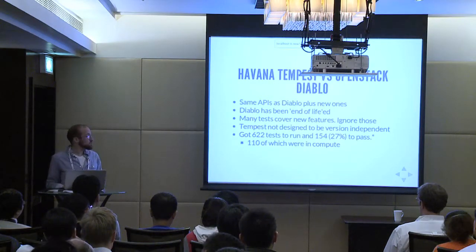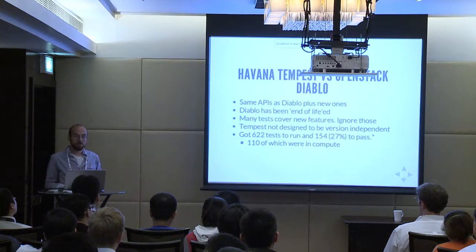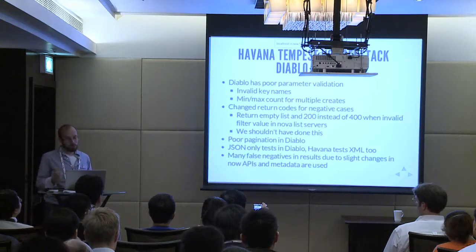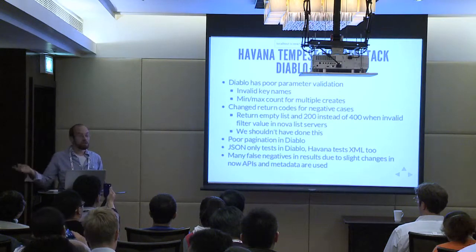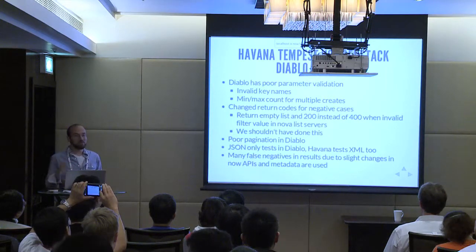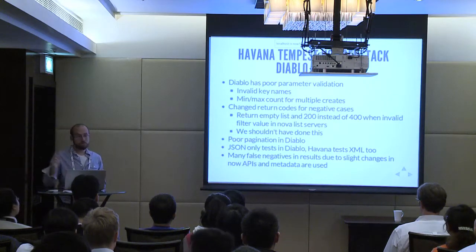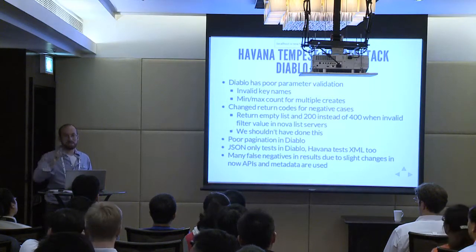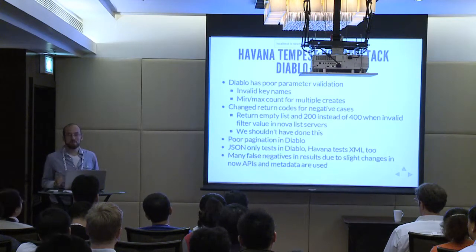I got 622 out of those 1,100 or so tests to run, and 154 of those passed — 110 are compute. I thought that was a little surprising — it actually worked, though not as well as I thought. Part of what I found in Diablo was really poor parameter validation. Passing a bad parameter would just return a 500 error without telling you — really bad user experience. We've done a lot of work fixing those. For example, an invalid key name would fail quietly in the background. Now we actually tell you. If your key name is too long, it says you can't do that instead of just truncating it. Another example: min and max count for multiple creates used to accept negative values, which doesn't make any sense — now we tell you that's silly.